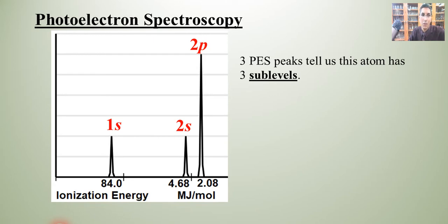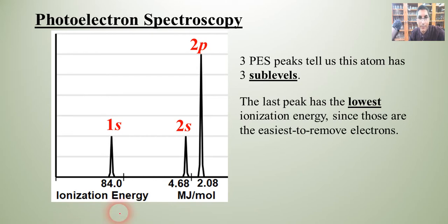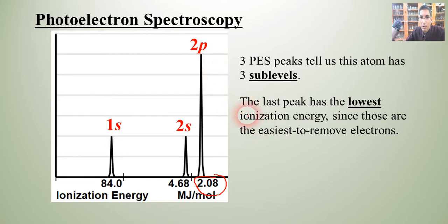Now, looking at the three peaks from left to right, the last peak — the tallest one — always has the lowest ionization energy. That makes sense because the number here is by far the lowest: only 2.08 megajoules per mole. Those last electrons are the easiest to remove, as opposed to the core electrons, which require 84 megajoules per mole to take away.